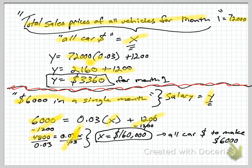and we're left with x equals this division, which leads to $160,000. Which makes sense. 0.03 is going to go into $4,800 a lot of times. 160,000 times.